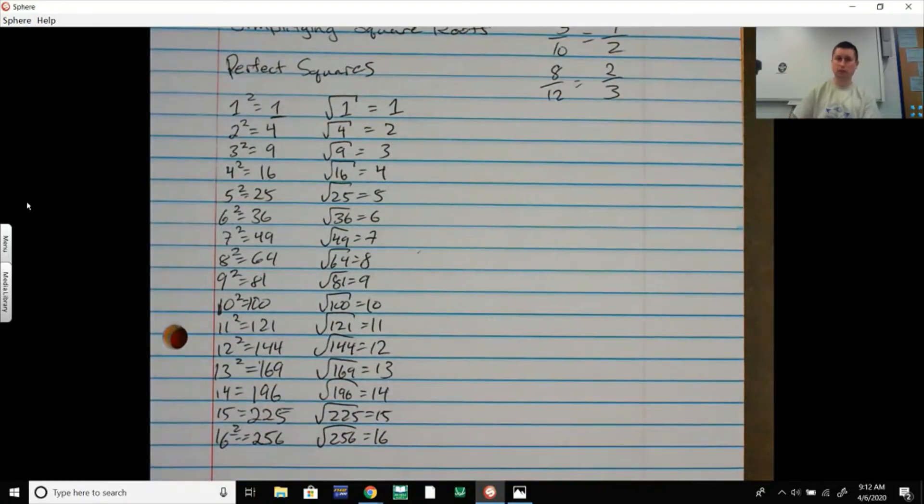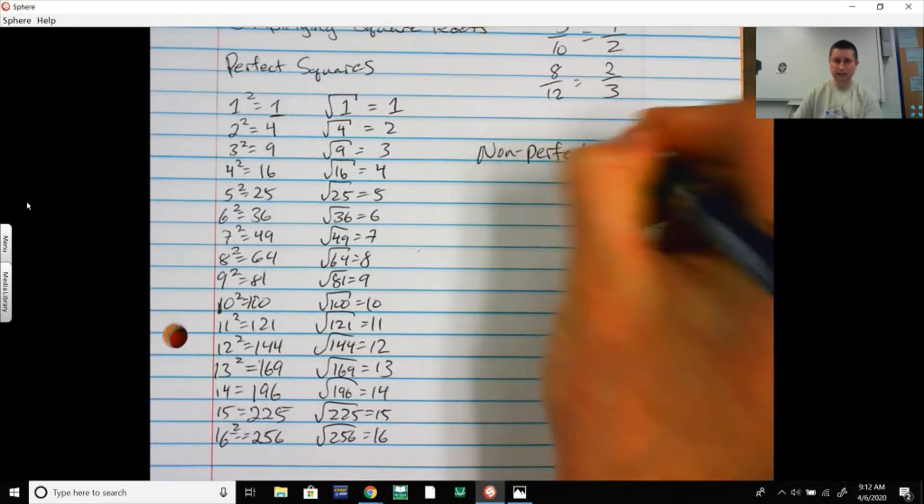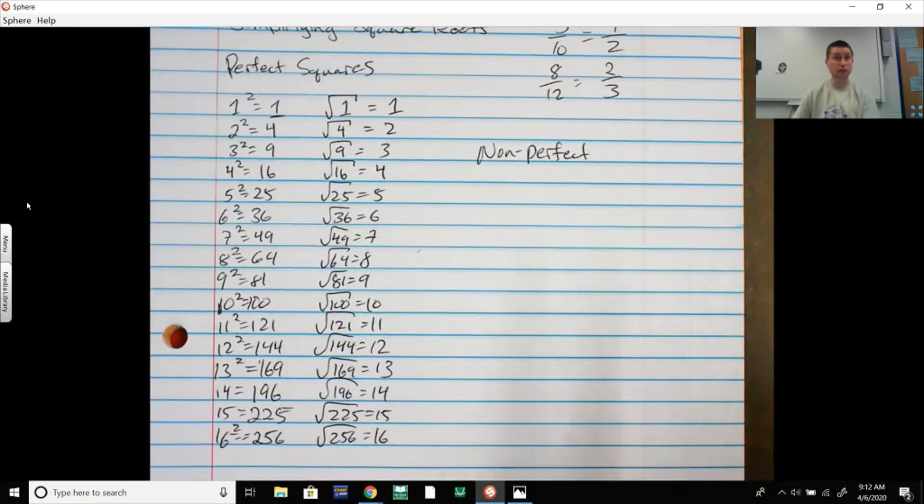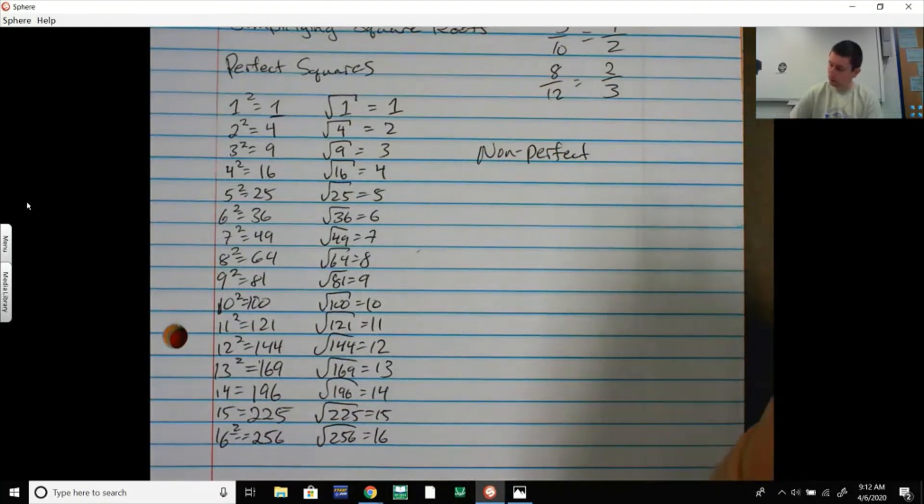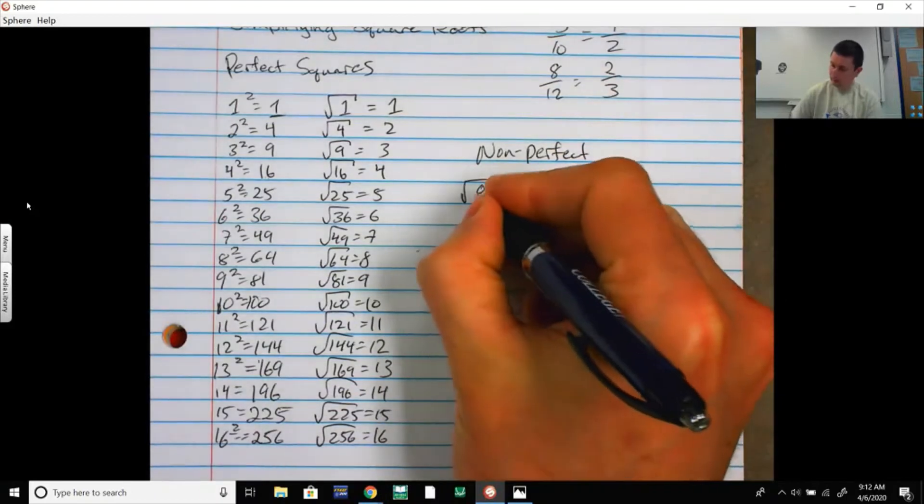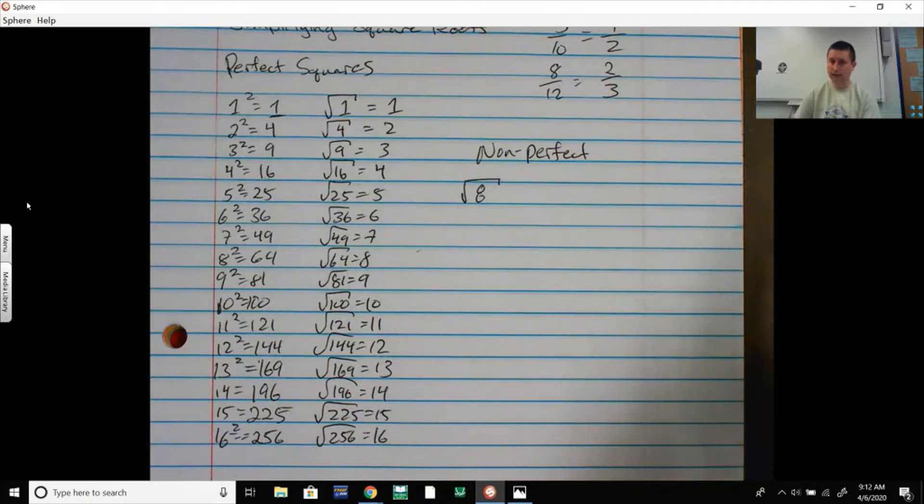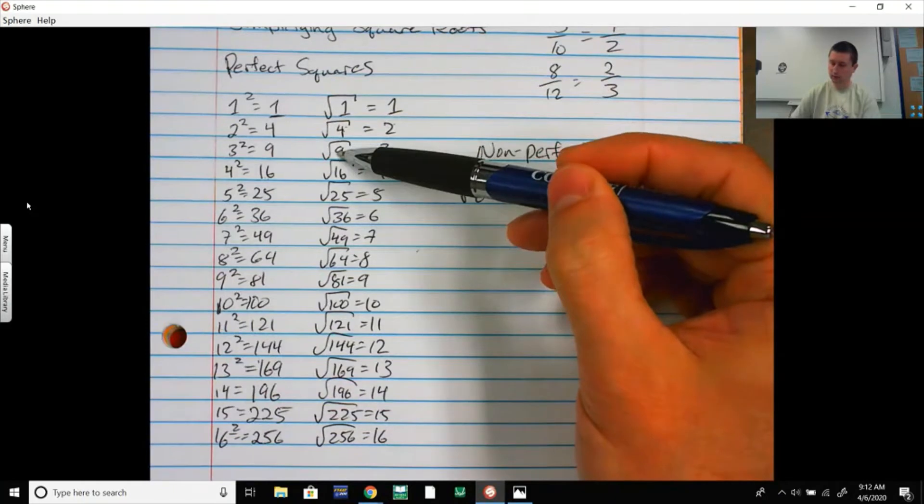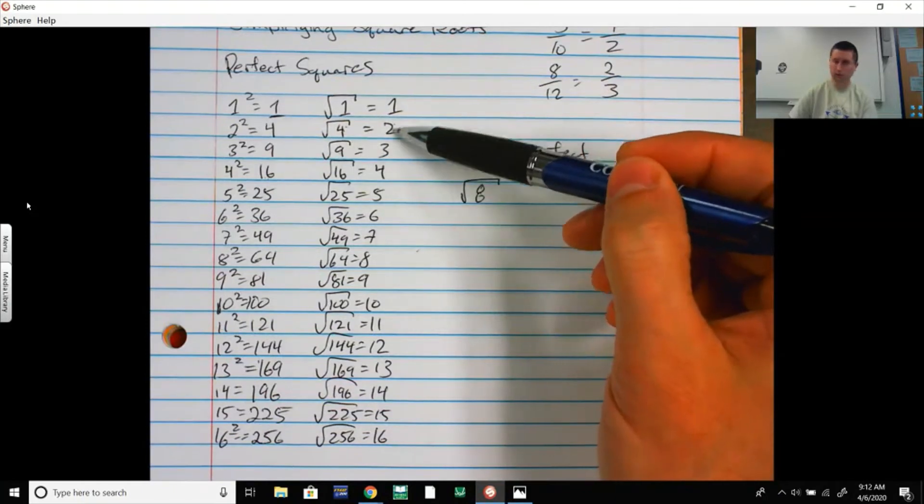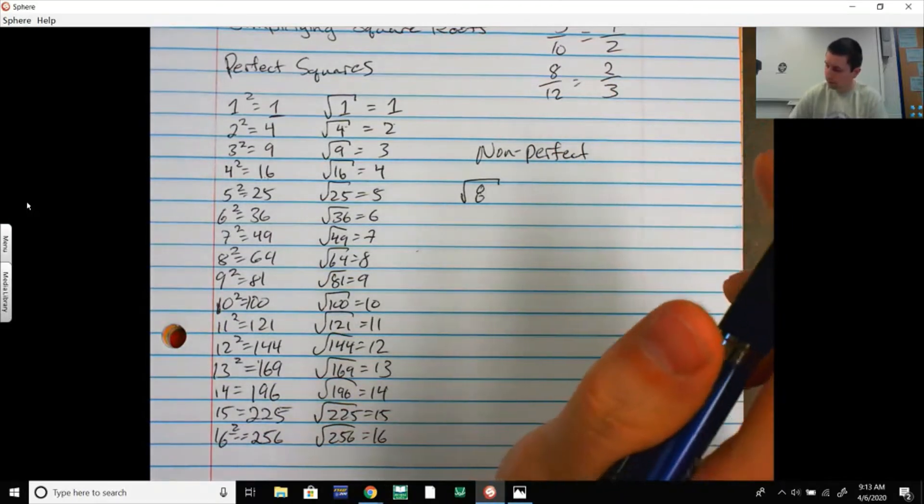So if they're perfect squares, they're easy to simplify. And you will have some of these on the assignment. But for non-perfect squares, we want these to be simplified and we will not have any decimals. So on your assignment, no decimals. If you're rounding things, you're doing it wrong.